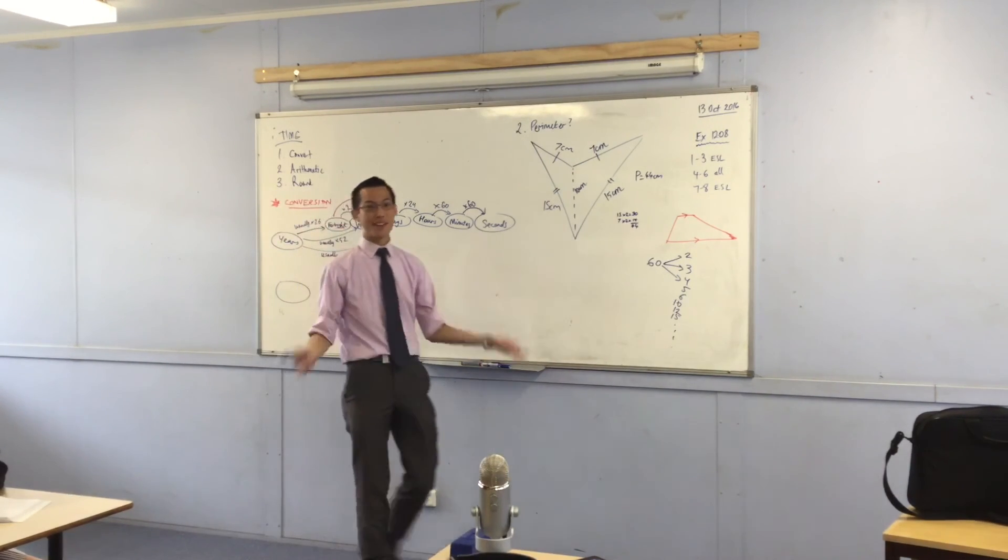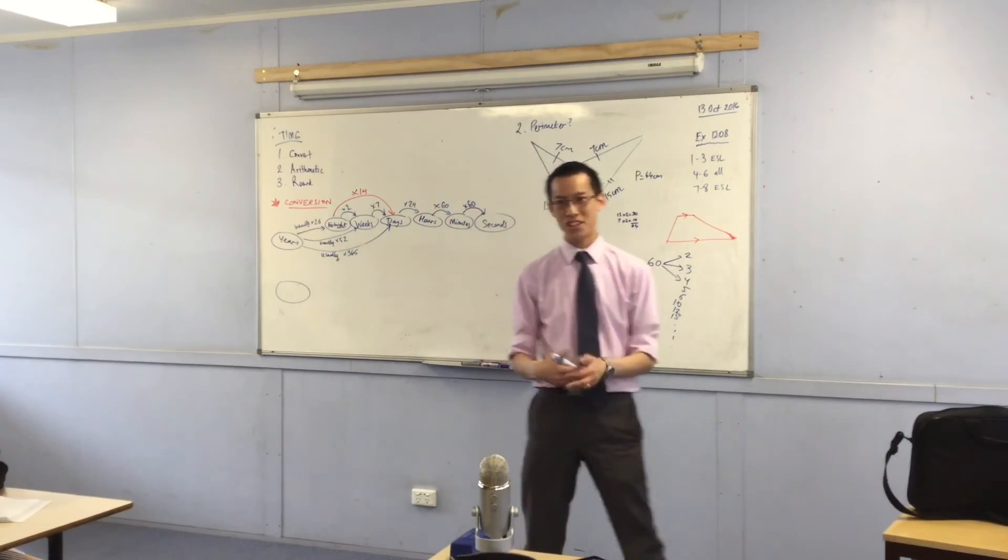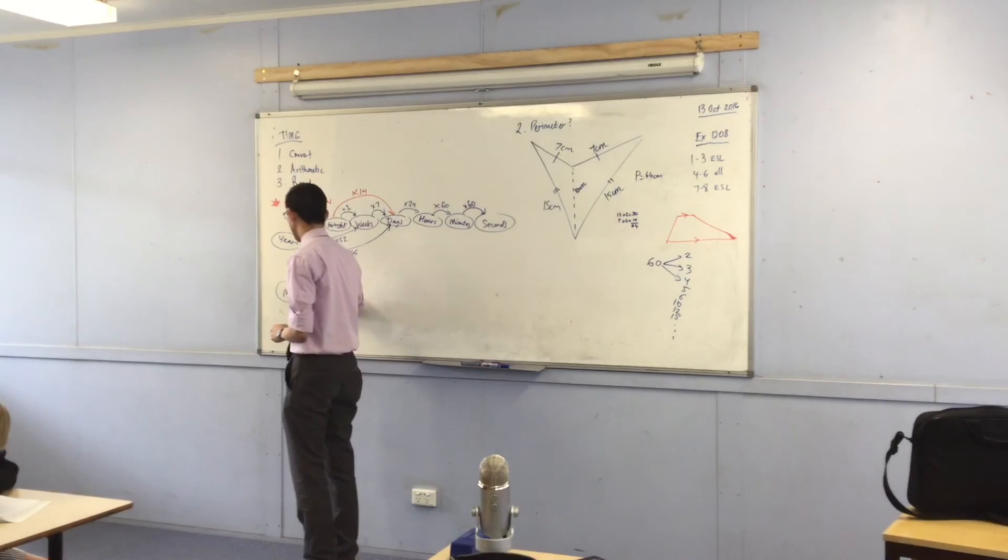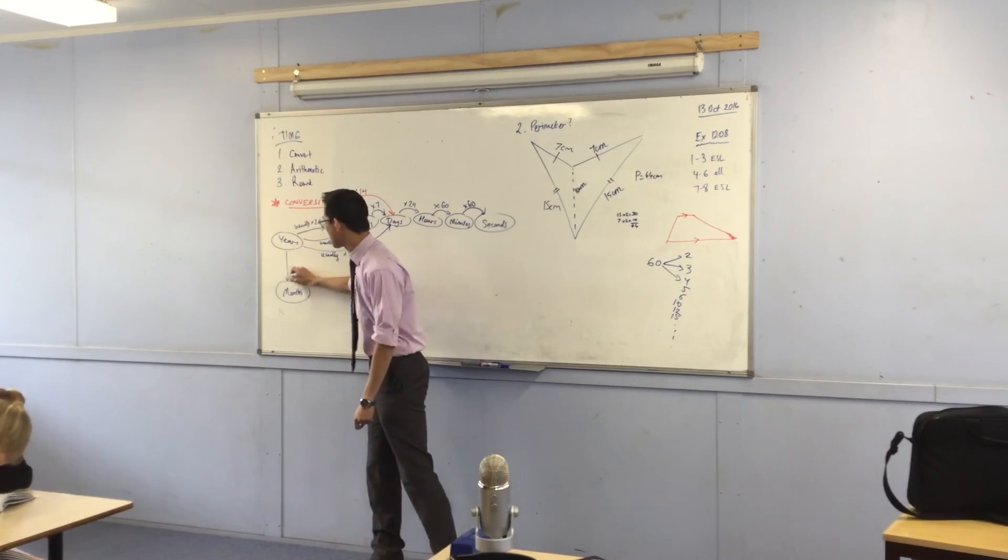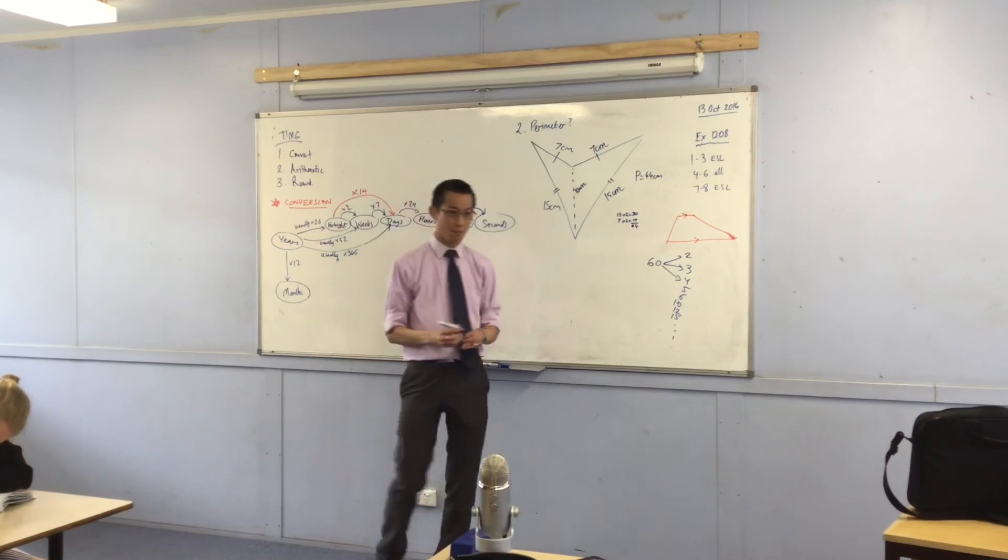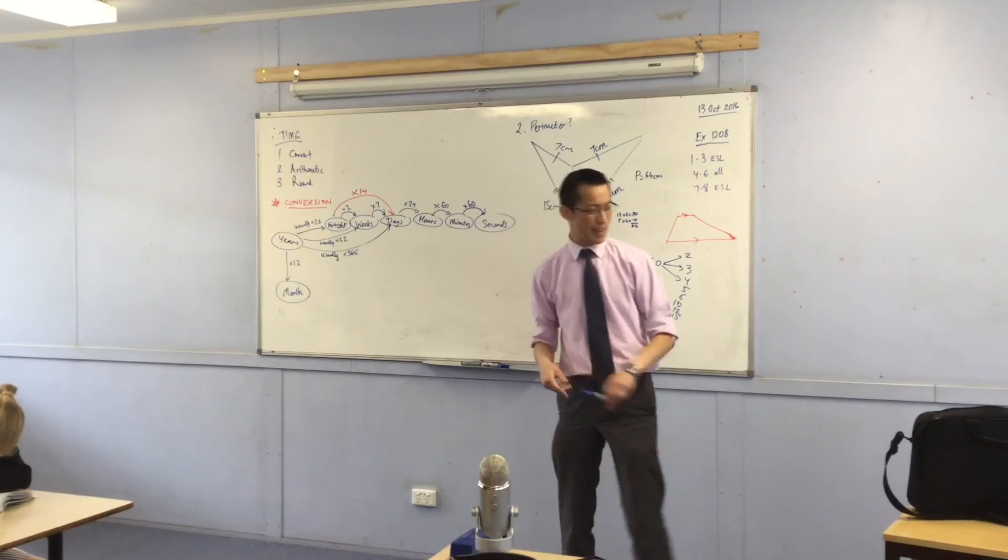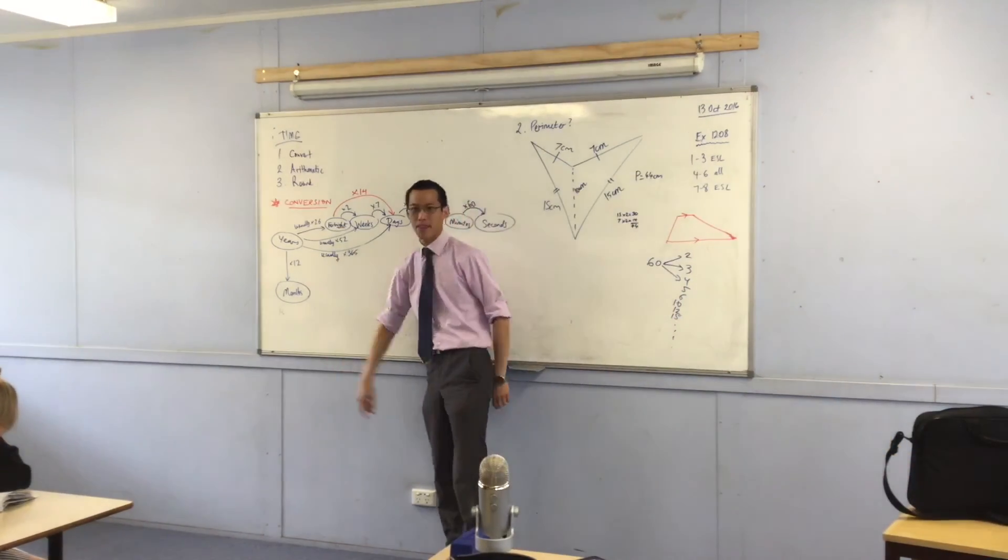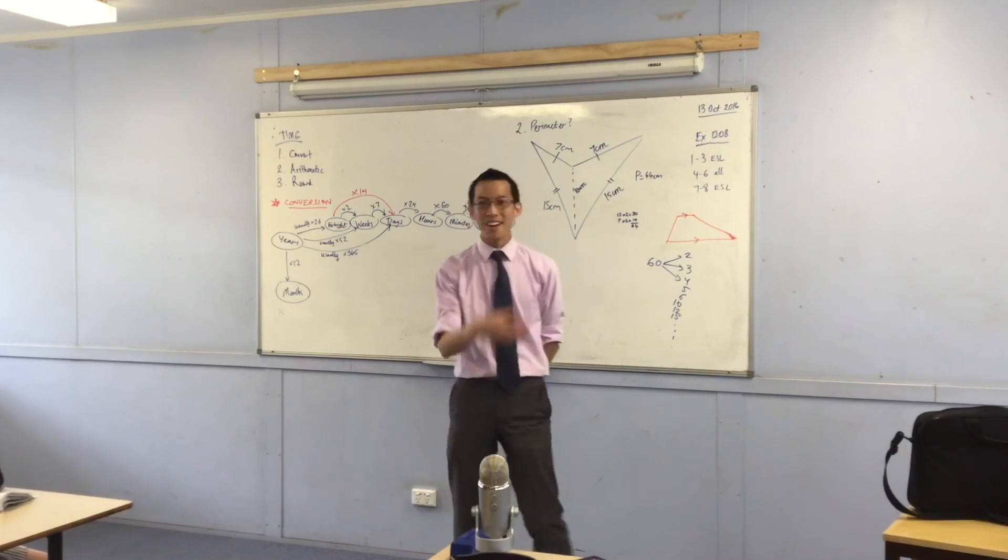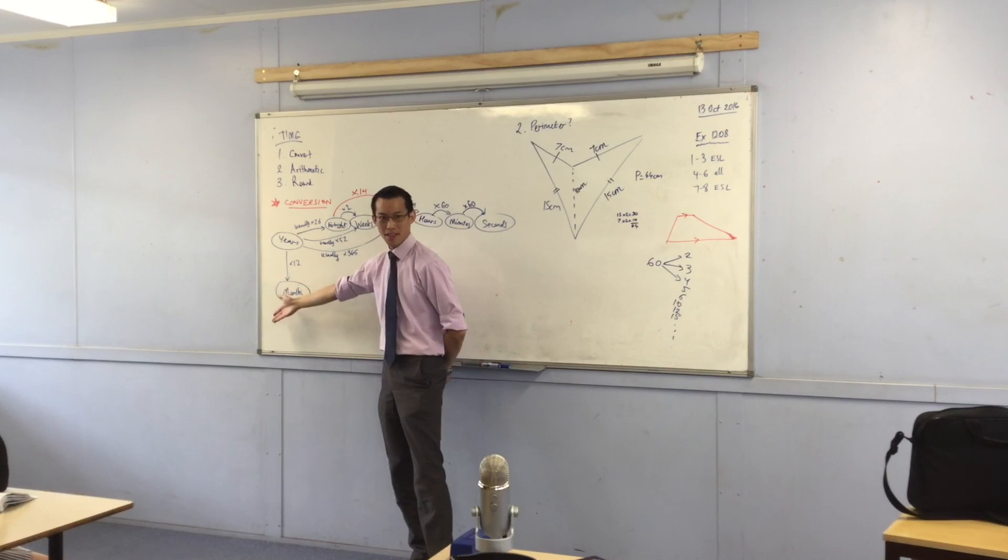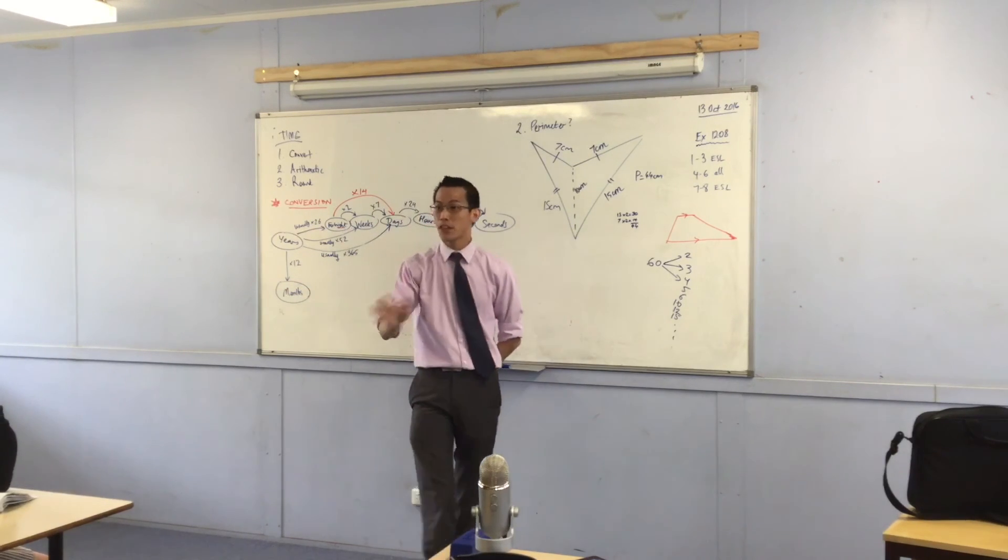There's one last bubble. And there's one last time unit I haven't mentioned. And that, of course, is months. Very good. Now, I put months over here, right down the bottom, because they're super weird. How many months in a year, guys? 12. We know this. But months don't play along with anyone else. How many days are there in a month? Answer, always different. Every single time, right?